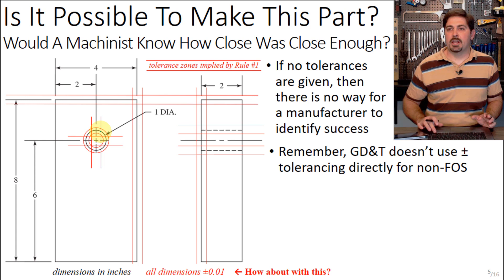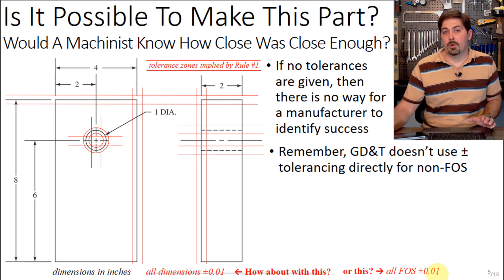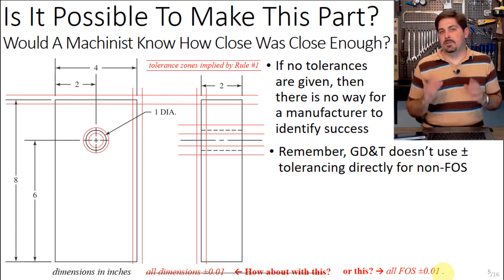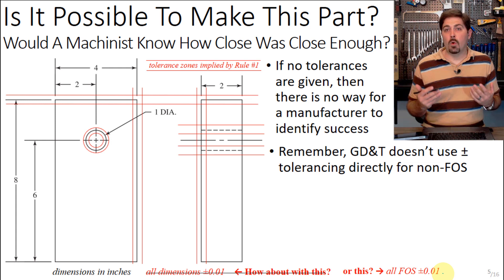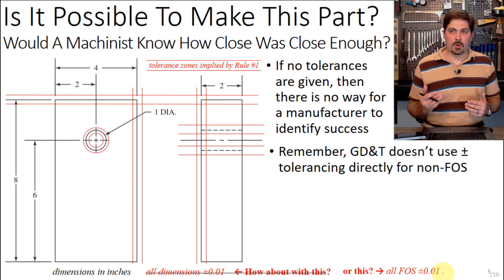This is actually one reason why in GD&T we said early on we're not going to use plus-minus tolerancing for anything but features of size. If you have something that's not a feature of size, we won't use plain plus-minus tolerancing — partly because it creates ambiguity as to the actual shape of those tolerance zones.